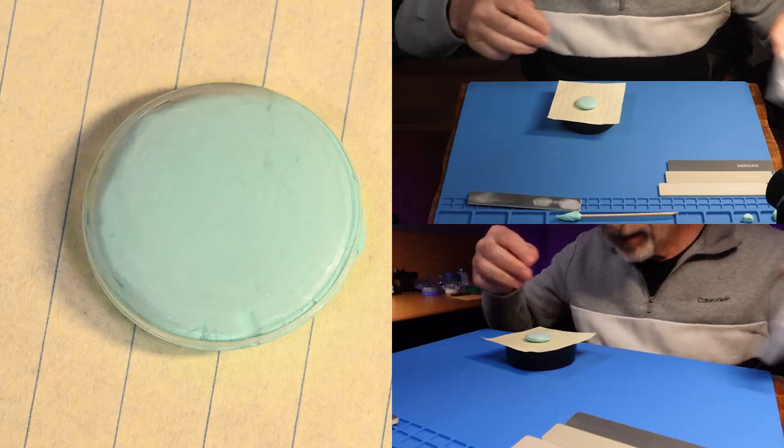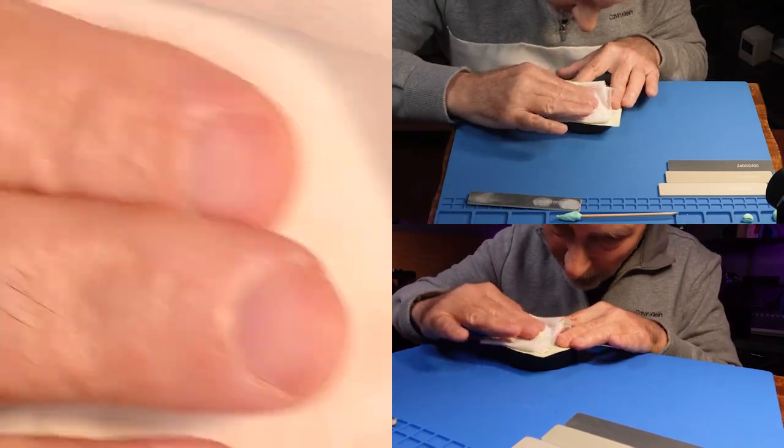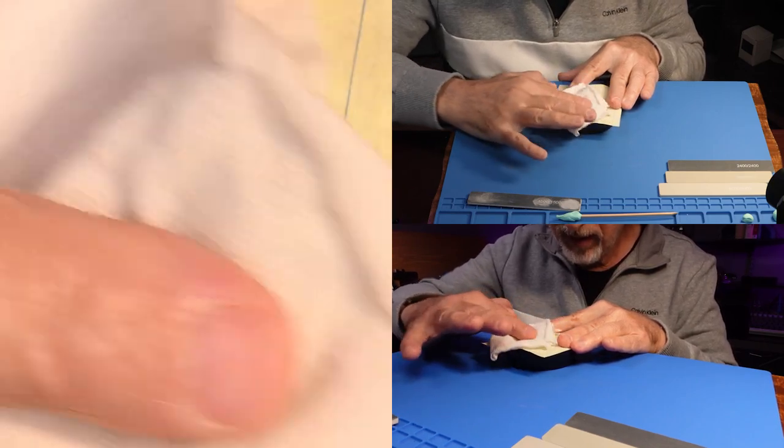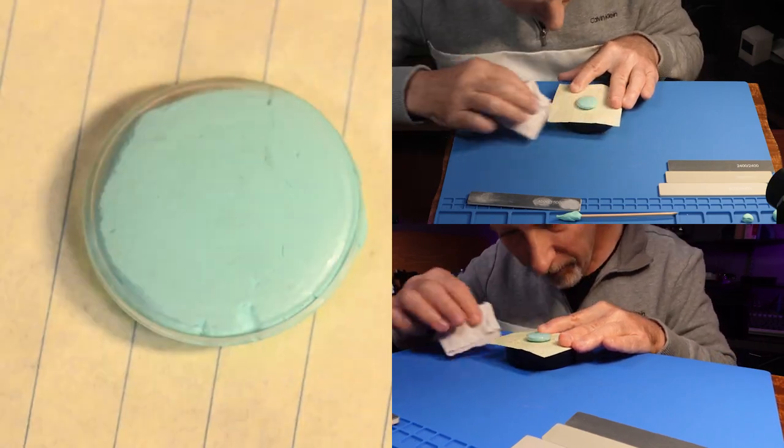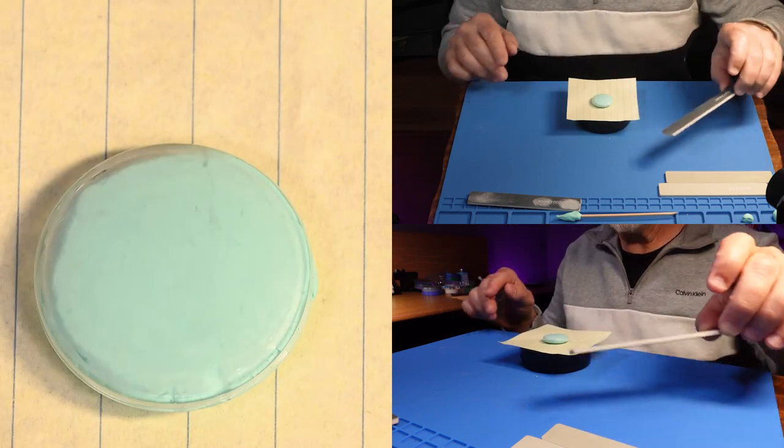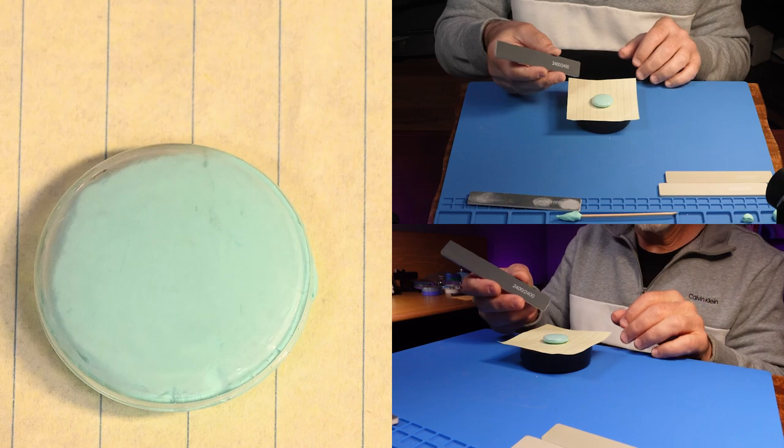Well, I'm betting that that's going to be almost invisible if we can successfully polish this without making it so thin that it just caves in on itself. So it's completely non-reflective right now. Let's move on to 2,400.